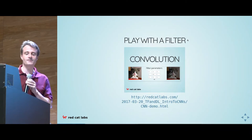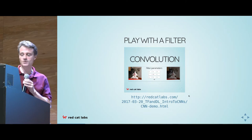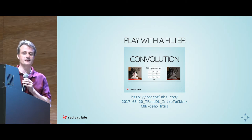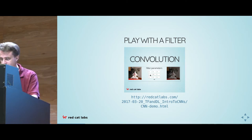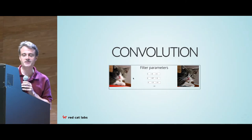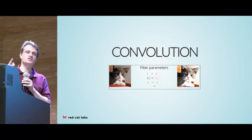Online there's a demo at redcatlabs.com where you can actually play with one of these convolutional filters. You take an image as input, pass it through a little mathematical operator with some parameters, and get out another little image. By changing the parameters, you can start altering the image — you can see that different parameters produce some altered version of the original.